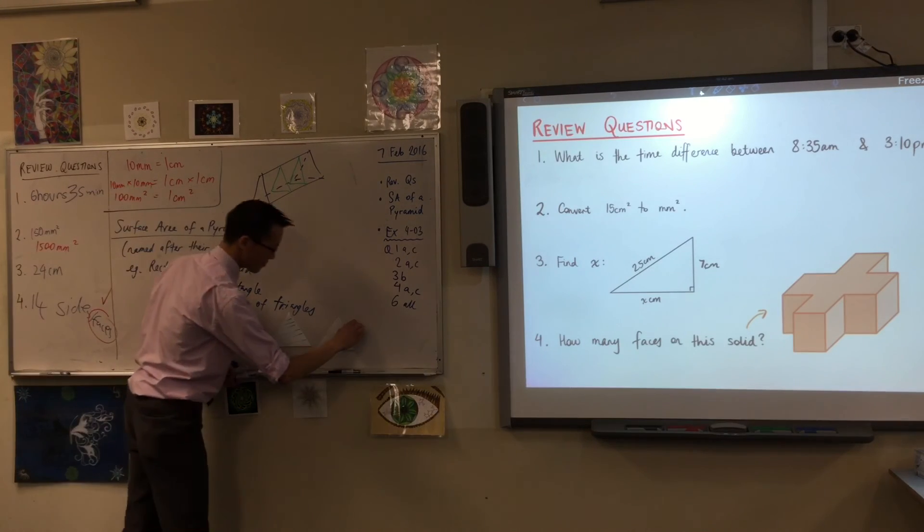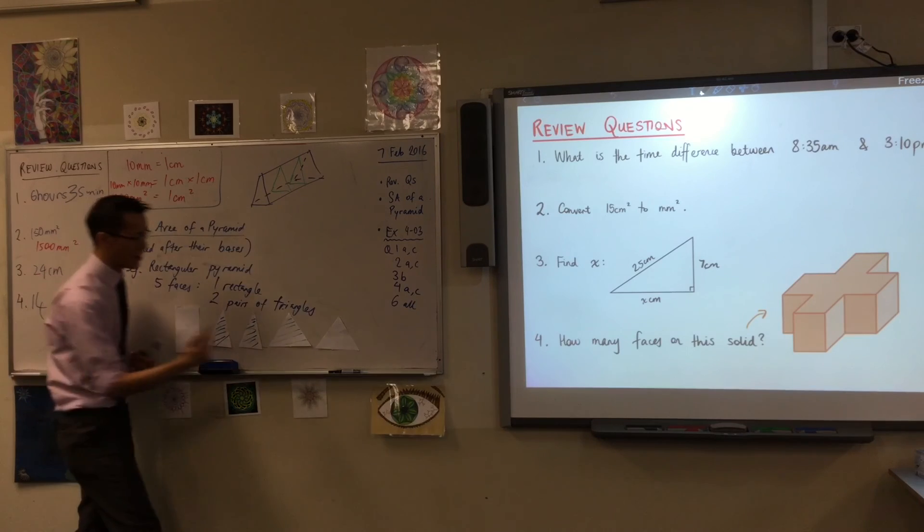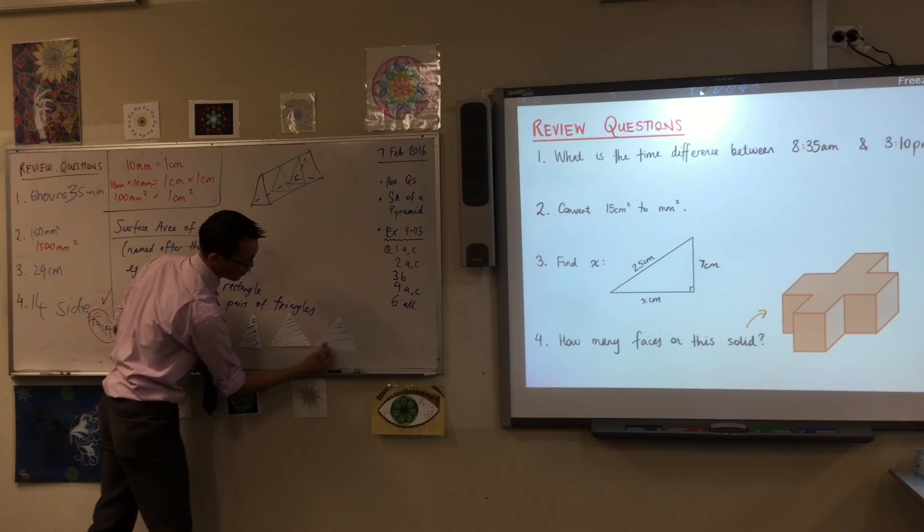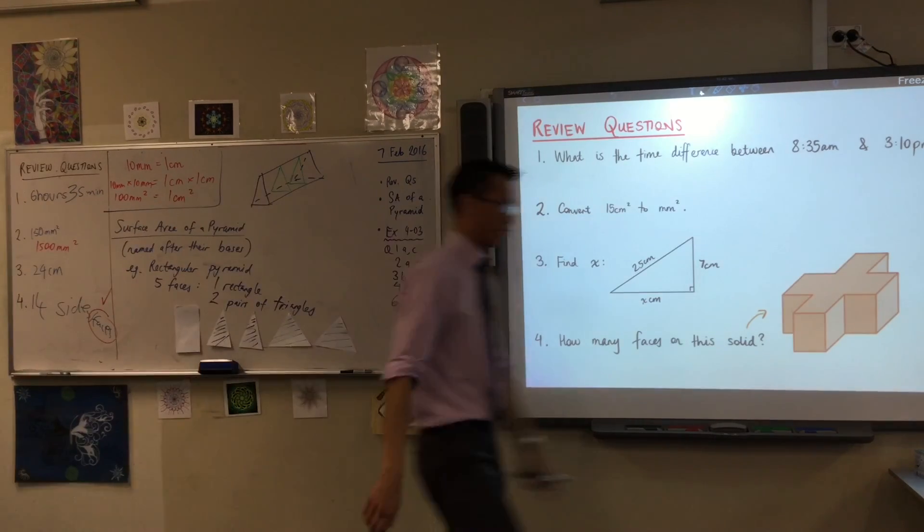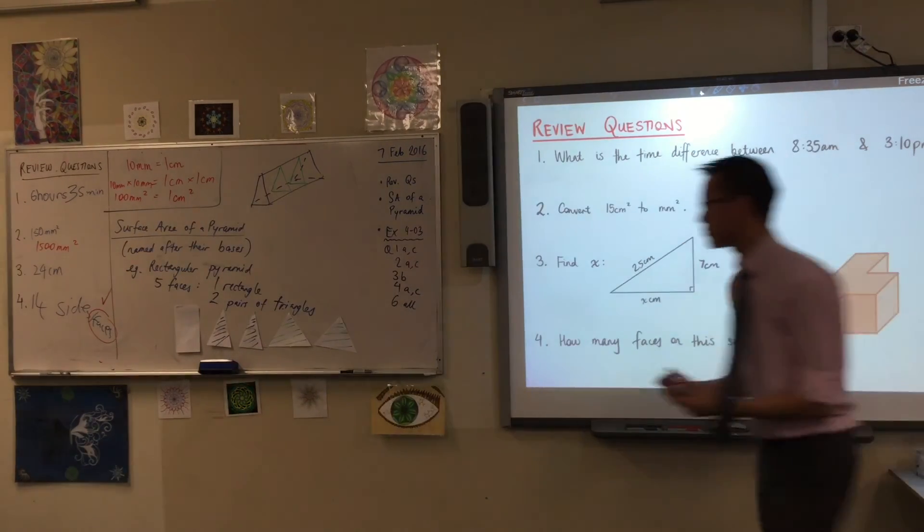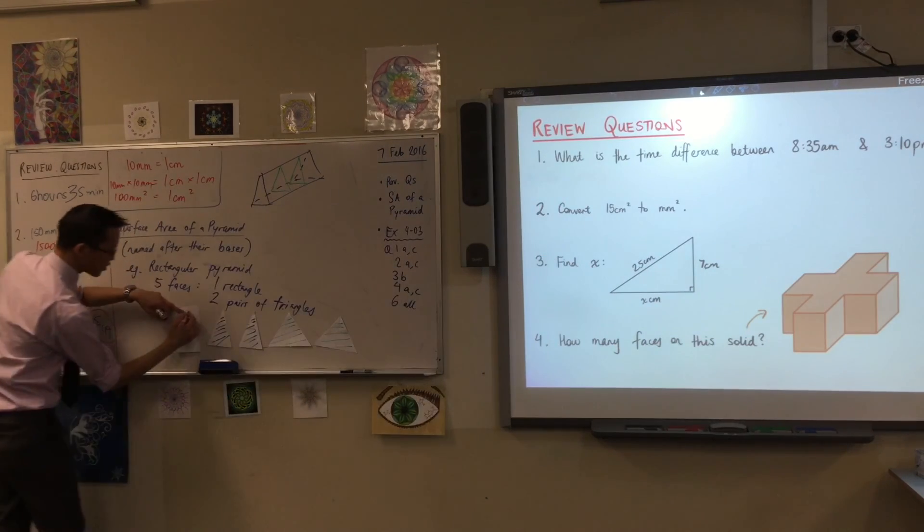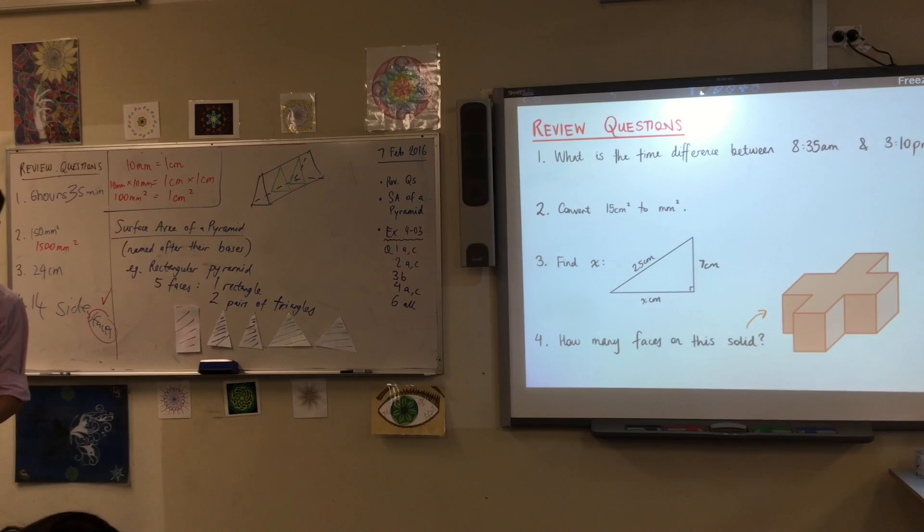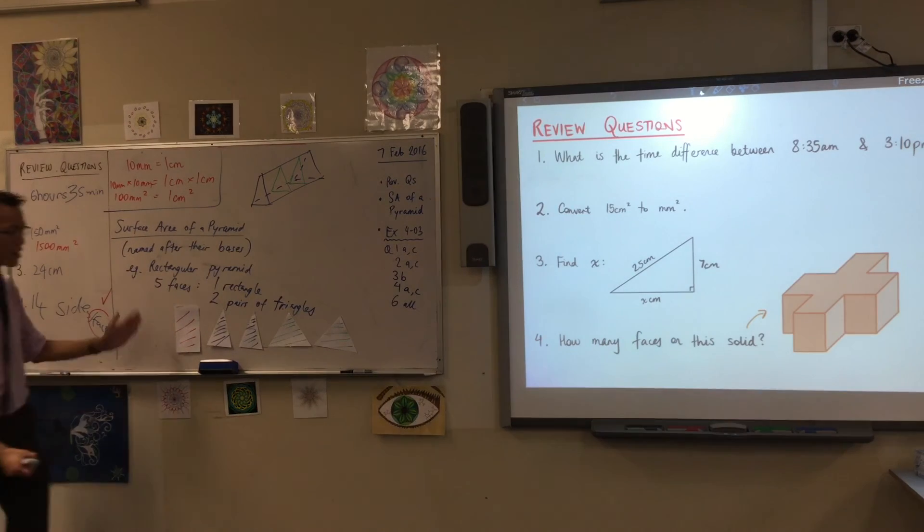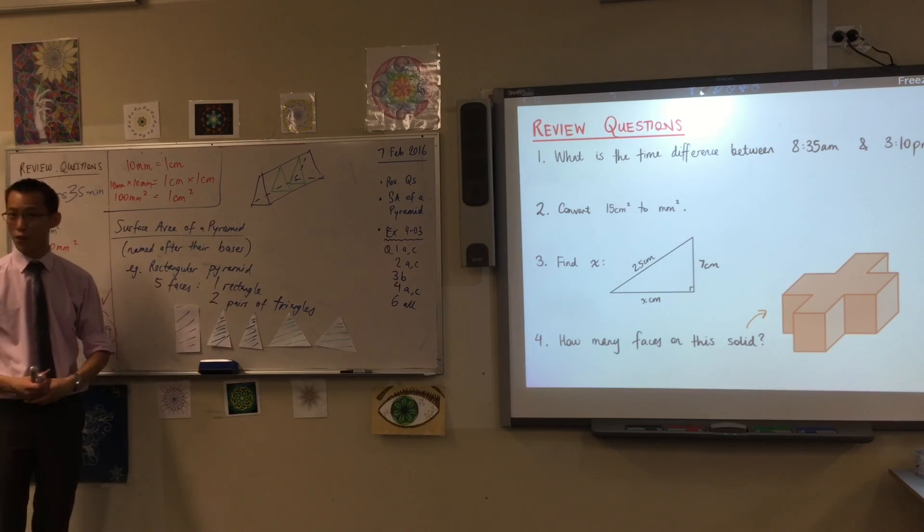So, you can see, I am color coding my faces here. You can see I've got two green triangles, two blue triangles, and there's my red rectangle over there. So, whenever you work out the surface area of a pyramid, you have to make sure these all come along for the ride.